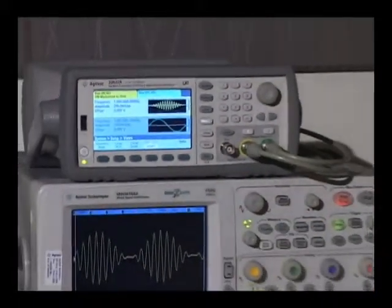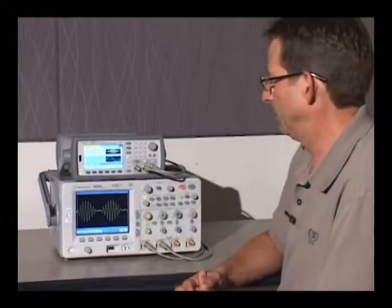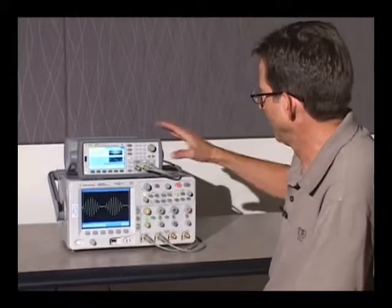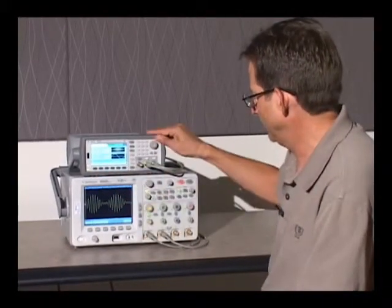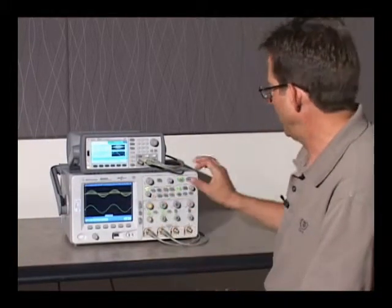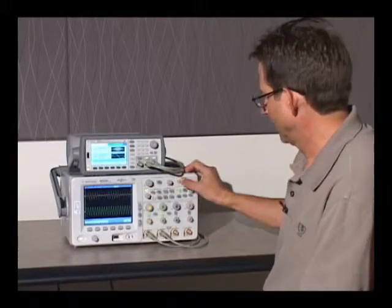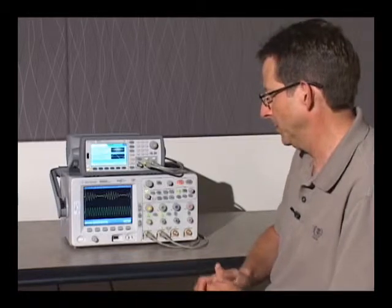the 33522A provides two-channel output capability. I'm now displaying both channels on the front display. I'll actually turn channel 2 on. And now you can see I still have the modulated waveform on channel 1. I'm now showing channel 2.